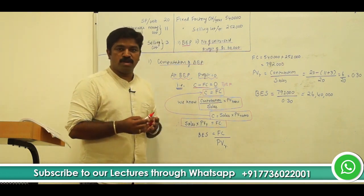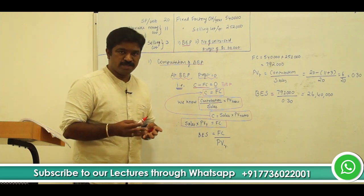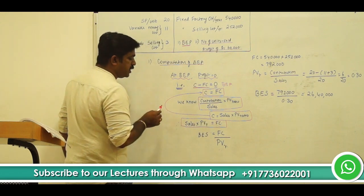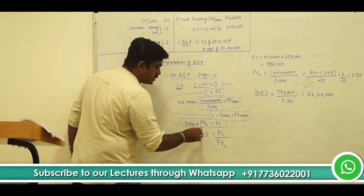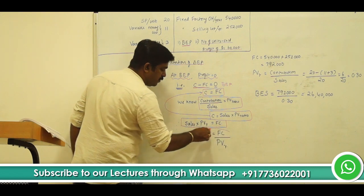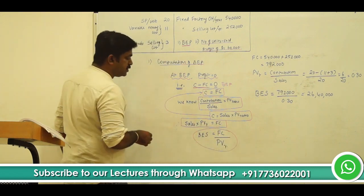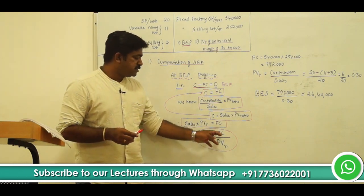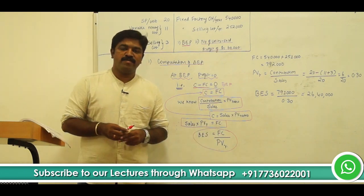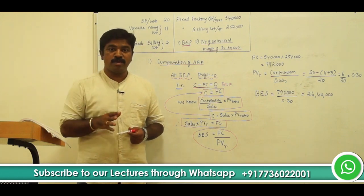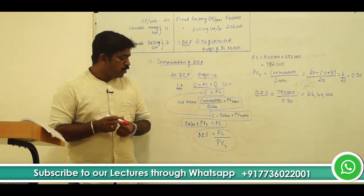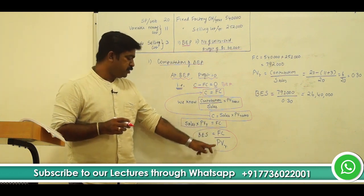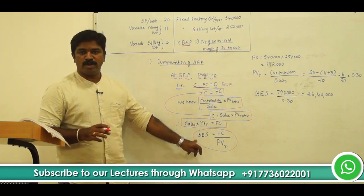The sales we are concerned about here is break-even sales. So, break-even sales into PV ratio equals fixed cost. It means break-even sales is nothing but fixed cost divided by PV ratio. This is the formula for deriving break-even sales. So, our task is: find out total fixed cost, find out PV ratio, and automatically we will be able to find out break-even sales.